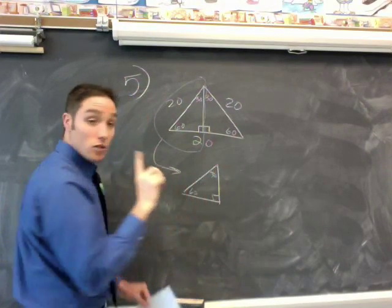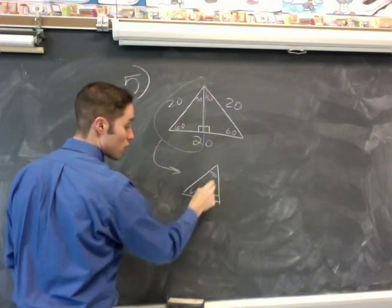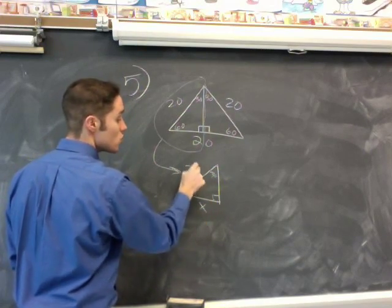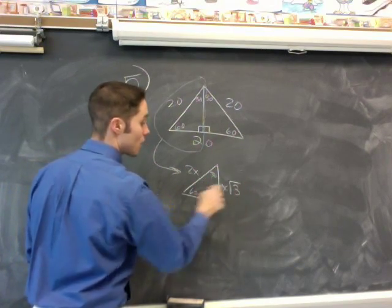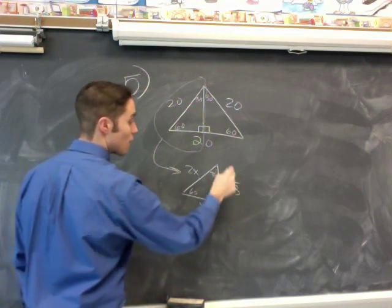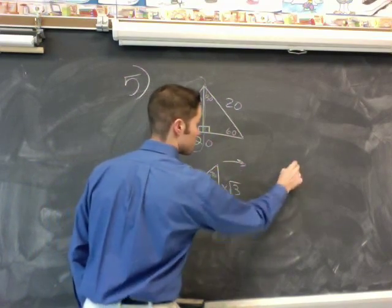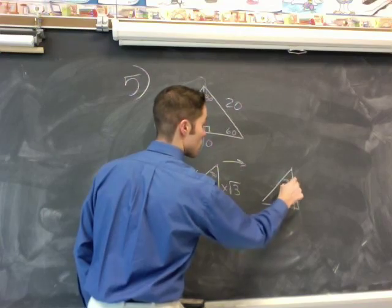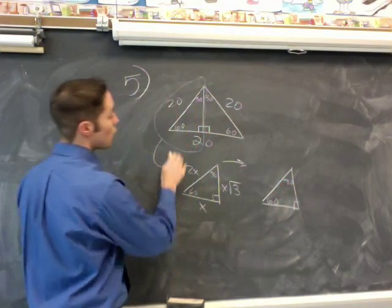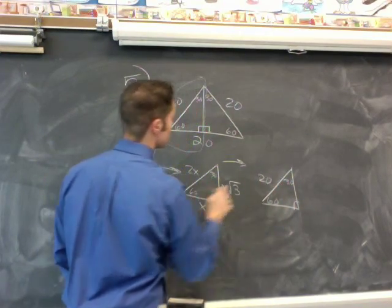So look at what I have here: 60, 30. Remember the special relationship? Across from the 30 is X, the hypotenuse is 2X, the other side is X radical 3. So let me apply that to this problem. Here's the 30, here's the 60. What do I know? The hypotenuse is 20.